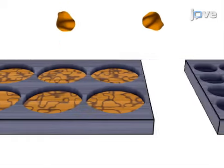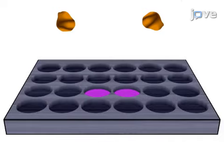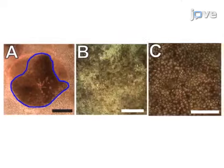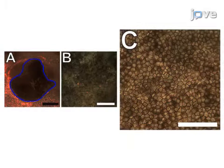Next, the RPE cells are isolated from the other differentiated cells in the dish, and then the cultures are expanded until sufficient numbers of cells are obtained. Ultimately, the dark pigmentation and cobblestone morphologies of the cultures can be used to confirm the RPE cells are reaching terminal differentiation. The main advantage of this technique over existing methods like spontaneous differentiation is that adding defined factors accelerates differentiation time and increases RPE yield.